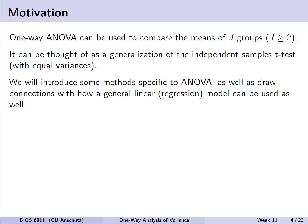What's the motivation for doing an analysis of variance, or an ANOVA? The big reason we may be interested in using it is that we want to compare the means of j different groups, where j could be any number greater than or equal to 2. We can generally think of it as an extension of the independent samples t-test, which assumes equal variances. In this lecture, we'll introduce some specific methods on how we can conduct this test for multiple groups, and also draw those connections to the regression model.